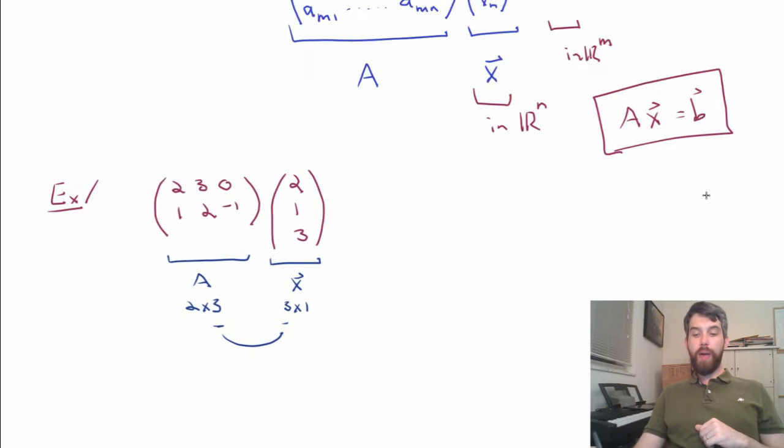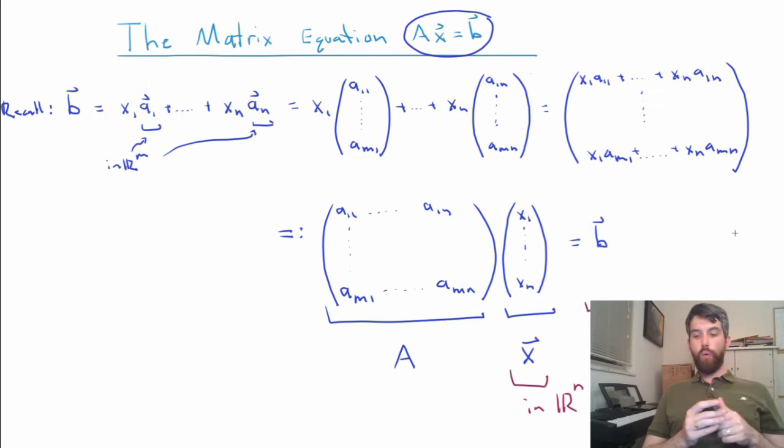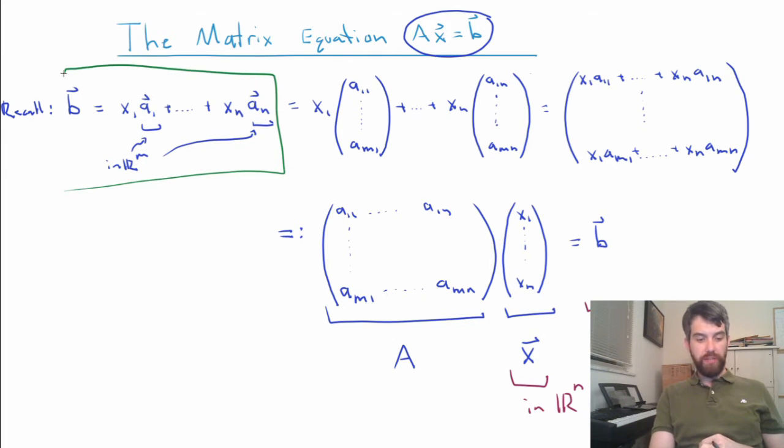To see this, let's go back to the content of the previous video. When we defined the idea of a matrix times a vector, it was all based out of this notion of a linear combination, where you took the sum of some scalar times a first vector all the way down to a scalar times the nth vector.